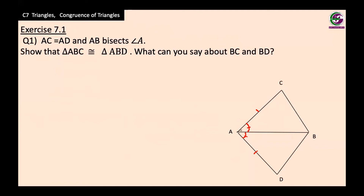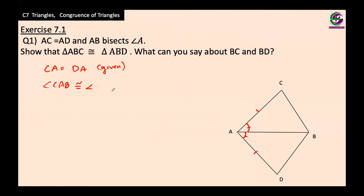Looking at triangles CAB and DAB: the side CA equals DA — that is given, so we have a side. Next, angle CAB is congruent to angle DAB because AB bisects angle A — that gives us an angle.